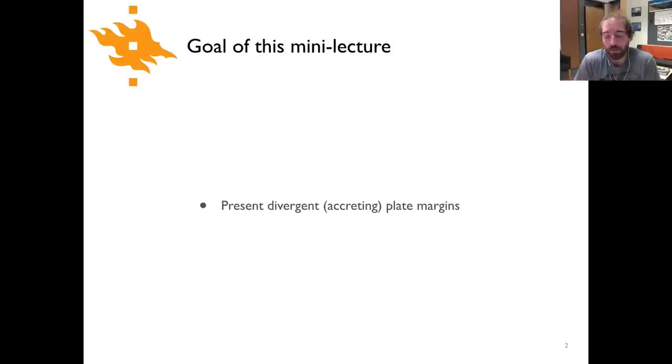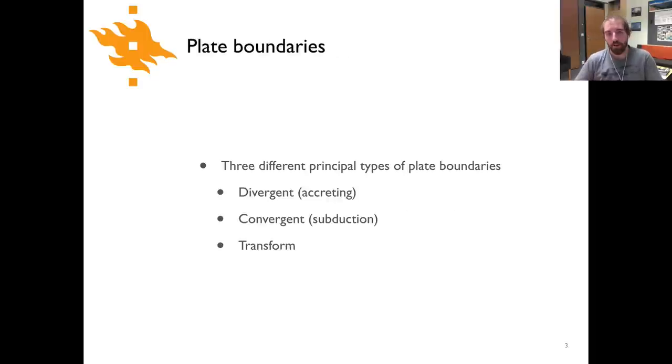The goal for this mini lecture is really quite simple. All we want to do is present the main features of a divergent plate margin. This is only one of three different types of plate boundaries. We'll start by talking about divergent or accreting plate boundaries where we're forming new plates and plates are moving away from one another. Then we'll talk about convergent plate boundaries where two plates are moving together, often in a subduction zone, and then we'll follow that up with a lecture about transform margins.